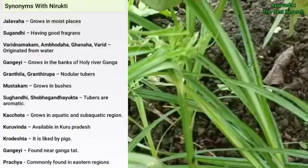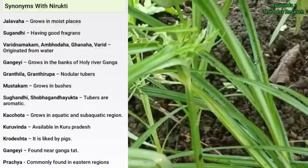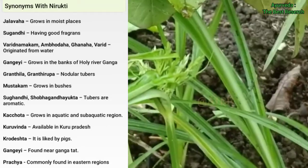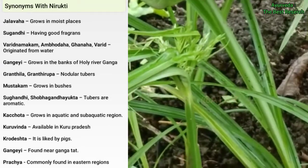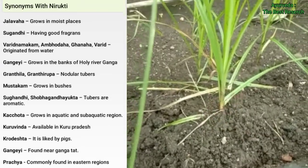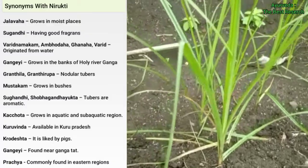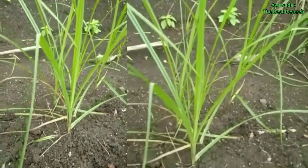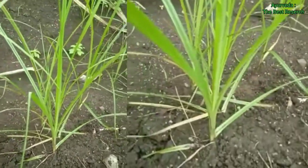Synonyms are Jalavaha, Sugandhi, Gangayi, Granthila, and Mustakam. Habitat: it is found in rice fields, lowlands, and waterlogged places throughout India.